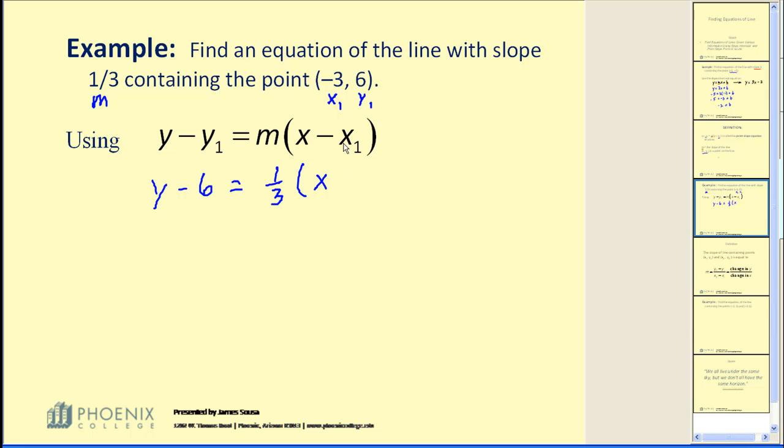Now if I want to simplify this or put this in slope-intercept form, essentially all I have to do is clear the parenthesis and solve for y. y - 6 = (1/3)x + 1. Add 6 to both sides. And our linear equation in slope-intercept form would be y = (1/3)x + 7.